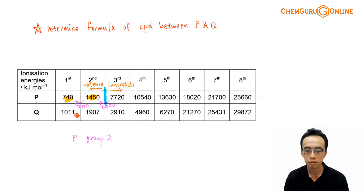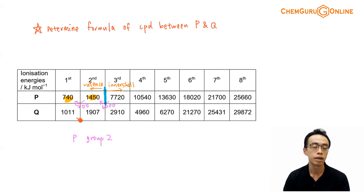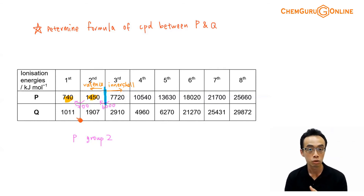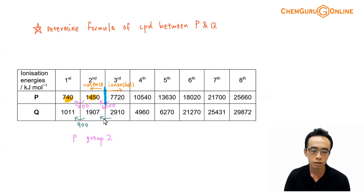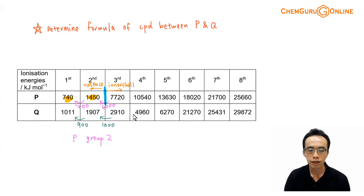Next, let us consider element Q. Same approach — we look at the differences between successive ionization energies to find a big jump indicating a change in the principal quantum shell. The difference between the first and second IE is only about 900, not very significant. From the second to third IE the change is about 1000, again not significant. Then from about 3000 to about 5000, a difference of about 2000 — again not very significant.